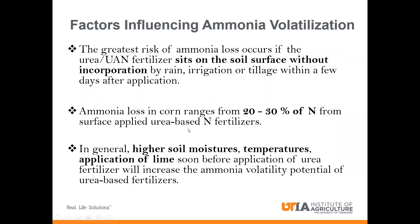What are some of the factors that drive ammonia volatilization? Three points: first, the greatest risk of ammonia loss typically occurs if urea-based fertilizer sits on the soil surface without being incorporated into the soil. Second, ammonia loss in corn can range from 20 to 30% of the nitrogen applied at side dress. Third, generally higher soil moisture, higher temperature, and higher soil pH tend to increase the ammonia volatilization potential of urea-based fertilizers.